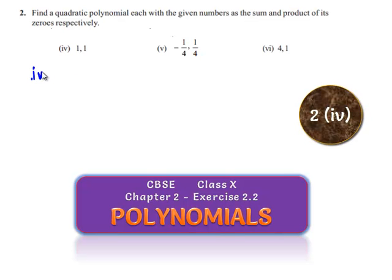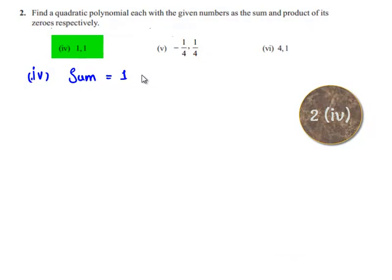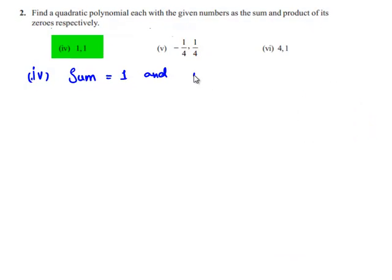Coming to the fourth part, the sum of the zeros given to us is 1 and the product of zeros is also equal to 1.